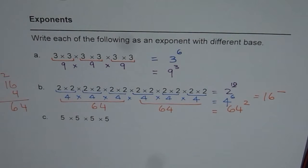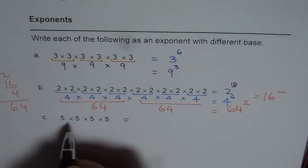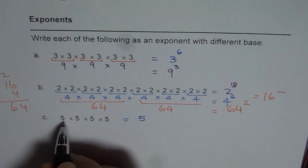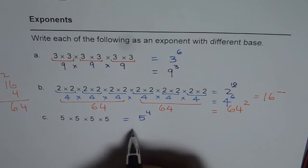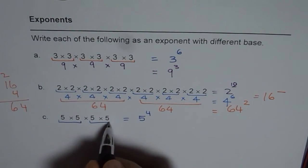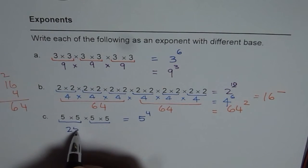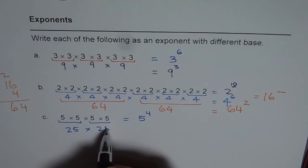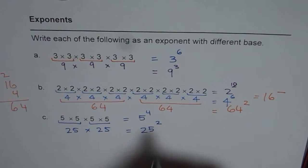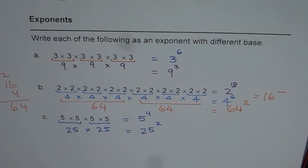Let's do one more question, this time with 5's. We have 5 times 5 times 5 times 5, which means 5 to the power of 4. In groups of 2, each group is 25. So we could write this as 25 squared. That is how we can write a number in different ways.